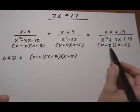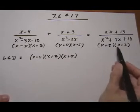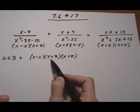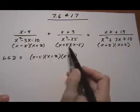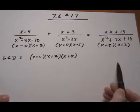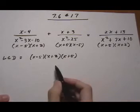And then for the last denominator, same idea, look to see if there is anything missing. We already have the x plus 5. We already have the x plus 2. So each denominator is contained within the LCD completely and we have no extra pieces that we don't need. So there is the LCD.